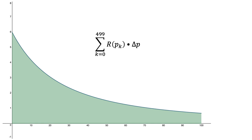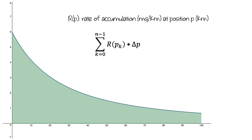We can use the idea of a limit to express what is happening here. R is the rate of accumulation in milligrams per kilometer at position p, and we divide the 100 kilometers into n intervals. If we let n get larger and larger and look at our limiting value of the sequence, then we'll be computing the total amount of dust that accumulates on the solar panels.